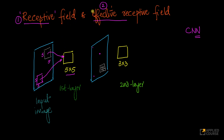Now, what is an effective receptive field? This is a slightly more intricate concept, but still simple. I'll explain it with the example of just one convolutional kernel, but in reality you'll have multiple kernels whose weights are learned through back propagation, as explained in our CNN chapter.